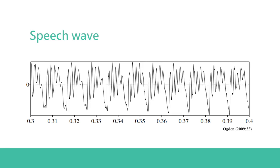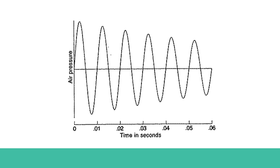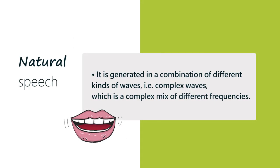This sound wave, which looks irregular, shows 10 and a half cycles in one tenth of a second. This is based on natural speech. Natural speech does not come in sine waves or simple sound waves such as the ones I presented earlier. Natural speech is generated in a combination of different kinds of waves—complex waves, which are a complex mix of different frequencies.